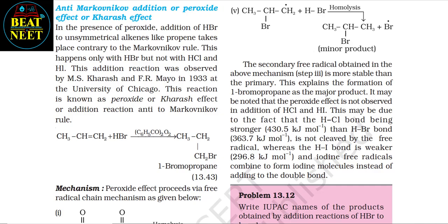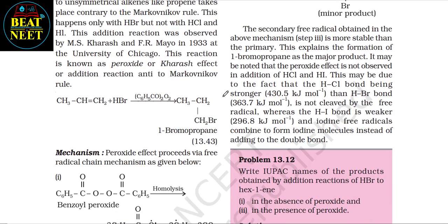Anti-Markovnikov addition, or peroxide effect, or Kharash effect: in the presence of peroxide, addition of HBr to unsymmetrical alkenes like propene takes place contrary to the Markovnikov rule. This happens only with HBr but not with HCl and HI. This addition reaction was observed by M.S. Kharash and F.R. Mayo in 1933 at the University of Chicago. This reaction is known as the peroxide or Kharash effect, and you can see this reaction here.